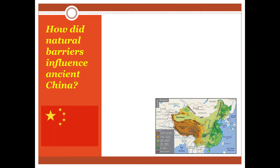Our first left-side question for today's lesson is: how did natural barriers influence ancient China? You will write that question on the left, and the bullet points that you see you will write to the right side of the line in your notes. Please note the map of China at the bottom.